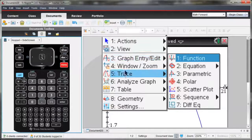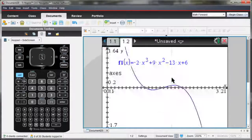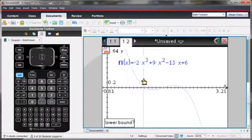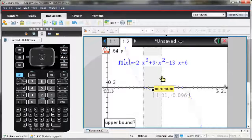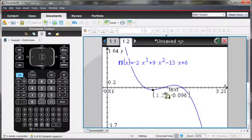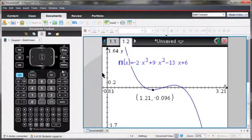I go to Menu, Analyze Graph, and then the second option there is Minimum. I'm going to drag the lower bound so it's just to the left of my minimum, and then upper bound so it's just to the right of the minimum. You notice that as I did that, the X and Y value for that minimum point showed up on the graph.